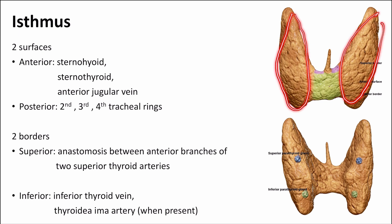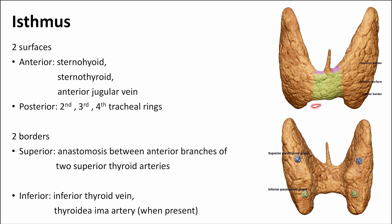The isthmus has an anterior surface, posterior surface, superior border, and inferior border. The anterior surface is related to the sternohyoid and sternothyroid muscles, and sometimes the anterior jugular vein. The posterior surface is related to the 2nd, 3rd, and 4th tracheal rings. On the superior border, there is anastomosis of the anterior branches of the superior thyroid arteries. On the inferior border, the inferior thyroid vein is present, and the thyroidea ima artery, if present, is found here.